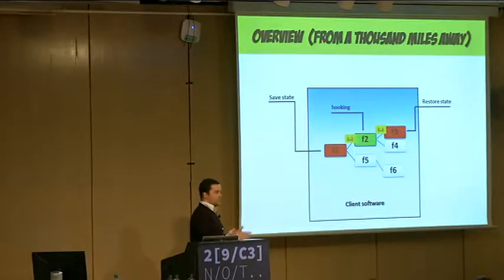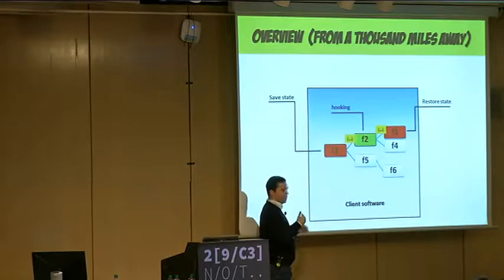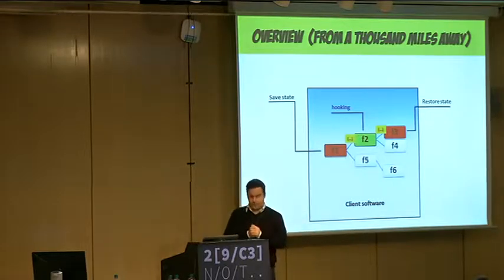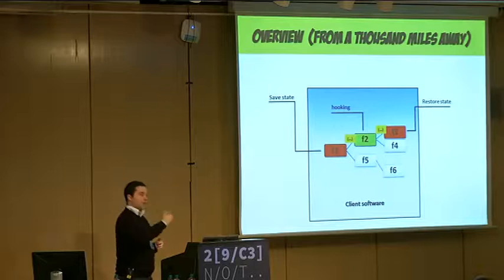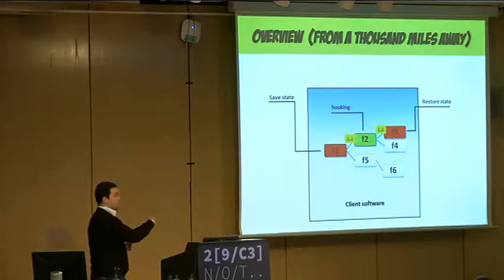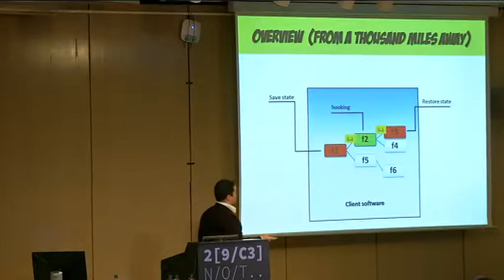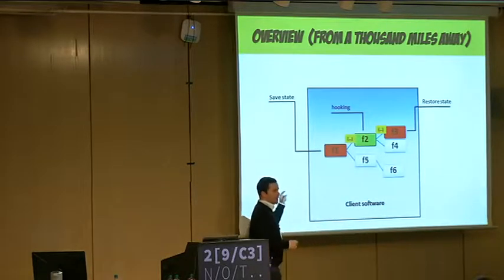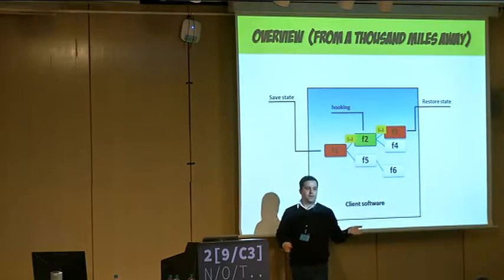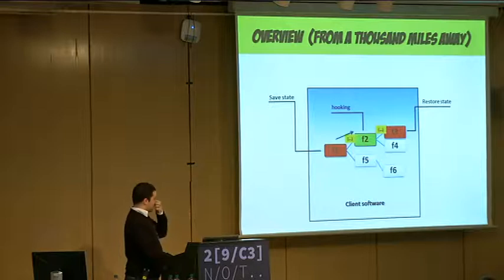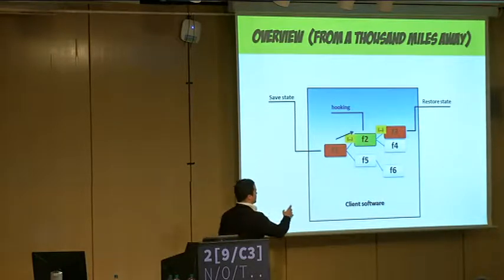But this function is not in the middle of nowhere. What happens is: a lot of functions get executed, they call each other, they return. Somewhere, this F2 — the interesting one — gets executed. And usually it calls some other functions as well, or returns, and then other functions get called. It's just like a flow.